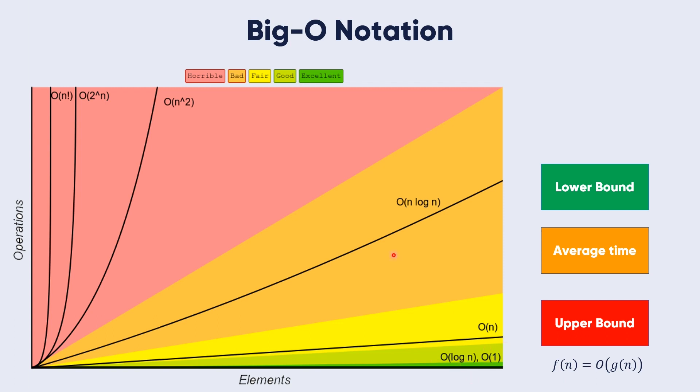While n log n is bad, the horrible things we may encounter are O(n²), O(2^n), and O(n factorial). Your mission is to make the horrible notation and horrible algorithms into good, fair, and maybe excellent algorithms.